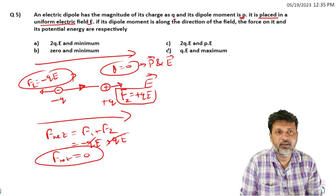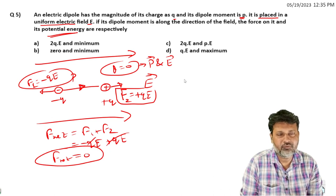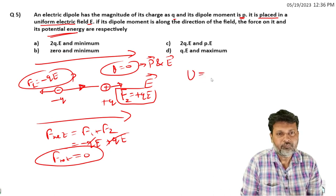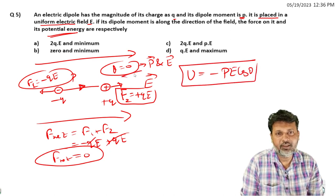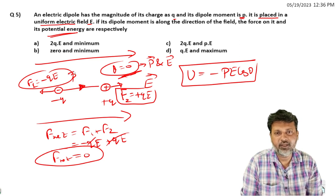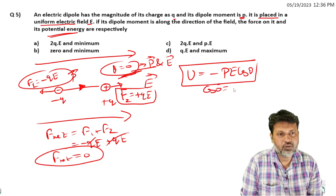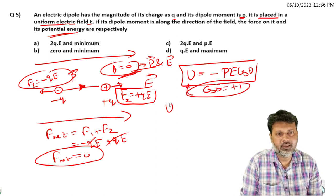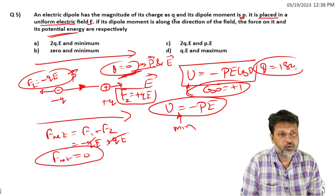Now for potential energy. The potential energy formula for a dipole is U = -PE cos θ. We already discussed that the angle between electric field direction and dipole moment direction is zero. So cos(0) equals +1, and the value becomes U = -P into E. This is the minimum potential energy.